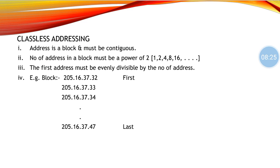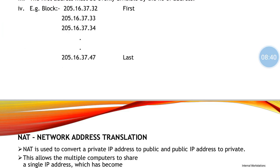The third restriction states that the first address must be evenly divisible by the number of addresses in the block. In the example, the first address ends with 32 and the block has 16 addresses — 32 divided by 16 is indeed evenly divisible, so this restriction is satisfied.